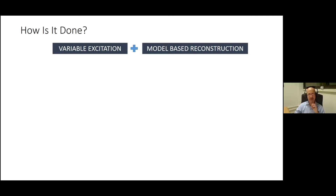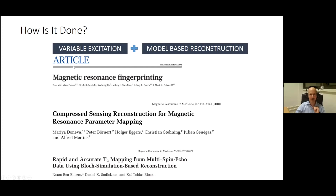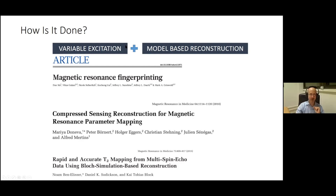Now I'd like to talk about how we do this. It's a combination of two approaches popularized in MR over the past decade: variable excitation and model-based reconstruction. The most famous publication is probably the 2013 Nature paper on magnetic resonance fingerprinting from the Griswold lab. These ideas have been around before that — model-based reconstruction in the context of compressed sensing, variable excitations in the context of T2 mapping based on echo modulation curves. We wanted to see how well they'd fare when applied to the complex problem of spectroscopy.